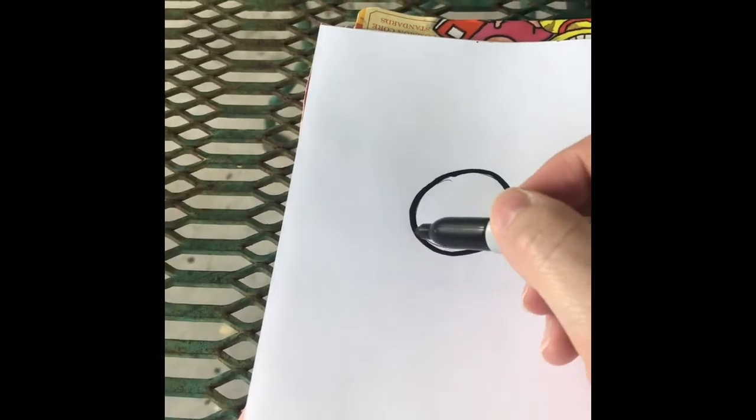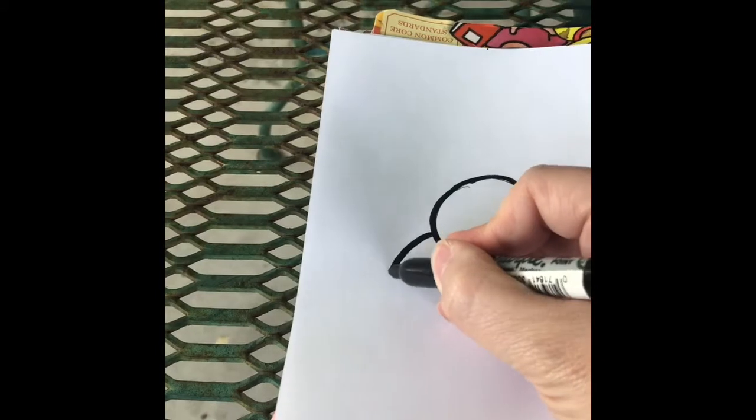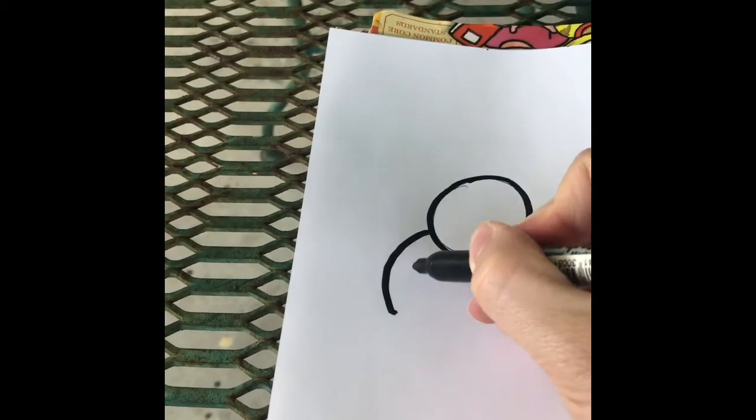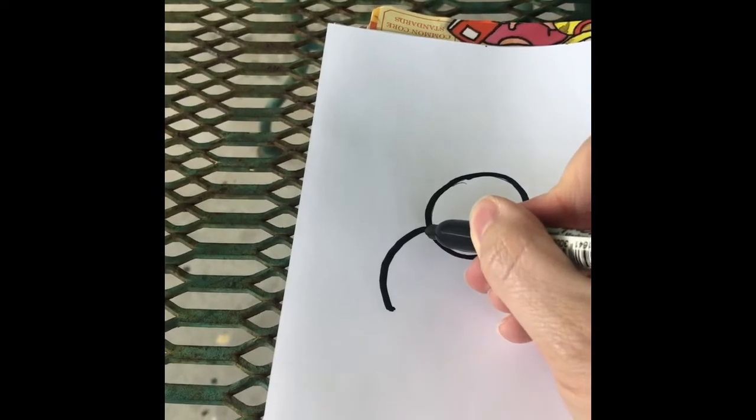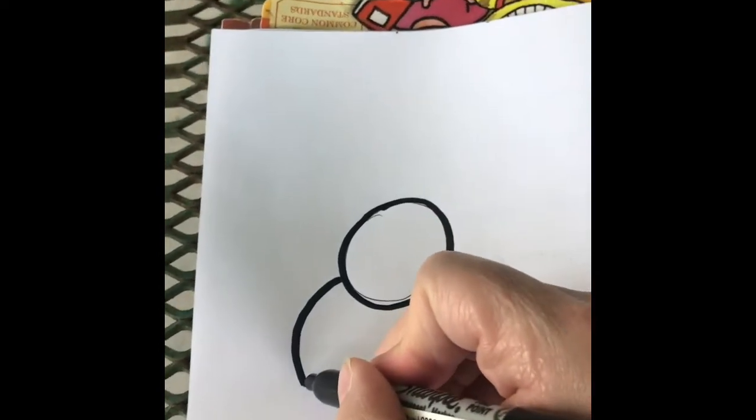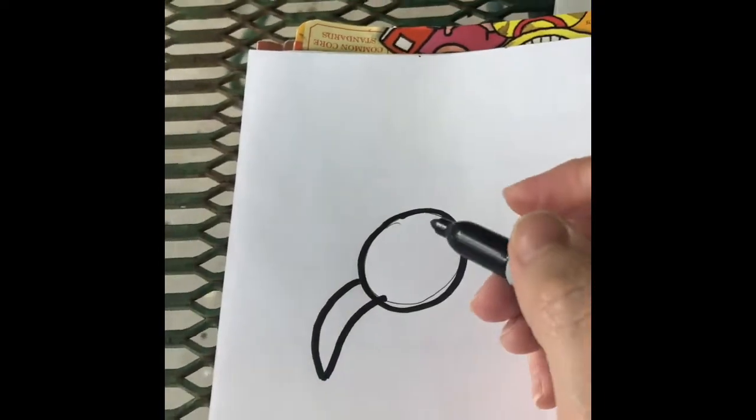Next, I want to make the beak. I'm going to start right in front of my head over here and I'm going to make a curve down. And then I'm going to start at the same point and curve back up. But don't go back to that same line. You want to kind of go towards the circle. So I'm going to curve back up. There's my beak.